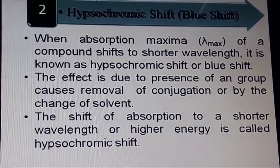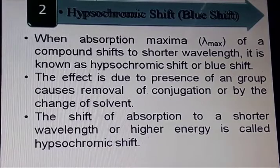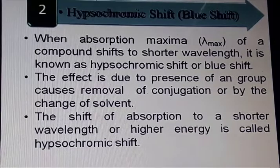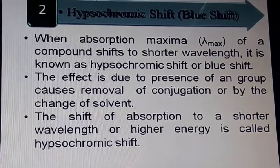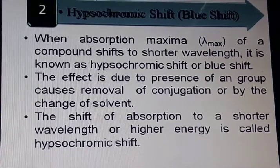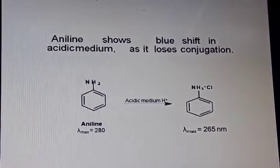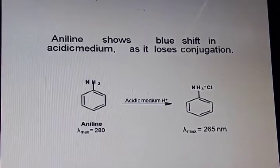Hypsochromic shift or blue shift: when the absorption maxima of a compound shift to a shorter wavelength, it is known as hypsochromic shift or blue shift. The shift of absorption to a shorter wavelength or higher energy is called hypsochromic shift. Aniline shows blue shift in acidic medium as it loses conjugation.